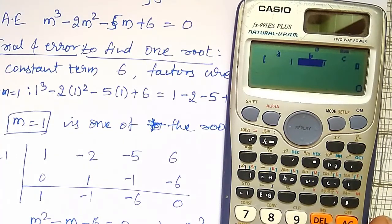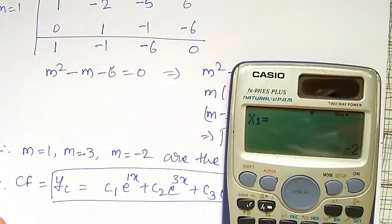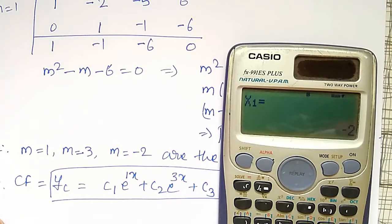The coefficient a is nothing but the m³ coefficient, 1. Next, b coefficient is minus 2, minus 5, next 6. And first root x₁ equal to minus 2 you are reading. One of the root is minus 2. Next, again press equal to, you will get 3. And again press equal to 1. All the three roots directly from the calculator you are getting.